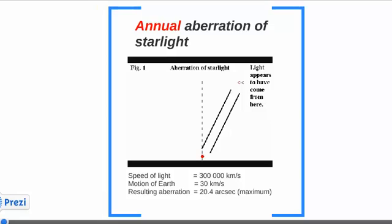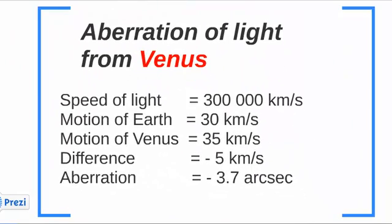Let's now have a look at how the aberration is calculated for the planets, for the Moon, and for the Sun. For Venus, it's calculated as follows: the speed of light is 300,000 km per second, the motion of the Earth is 30, the motion of Venus is 35 km per second. The difference is 5, and the resulting aberration term is 3.7 arc seconds.